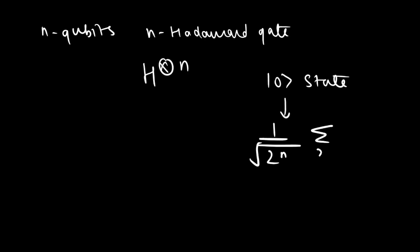This procedure can be generalized for n qubits using n Hadamard gate which is called Hadamard transform or Walsh Hadamard transform. And it is given as H⊗n. The result of performing the H transform on n qubits of 0 state is given as 1/√(2^n) summation over x |x⟩ state.